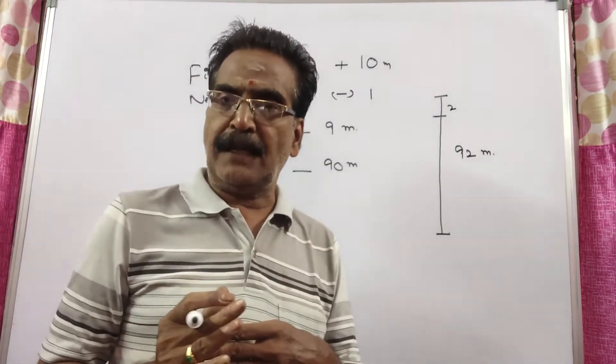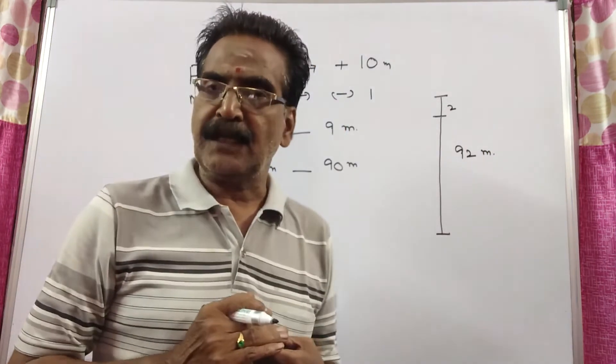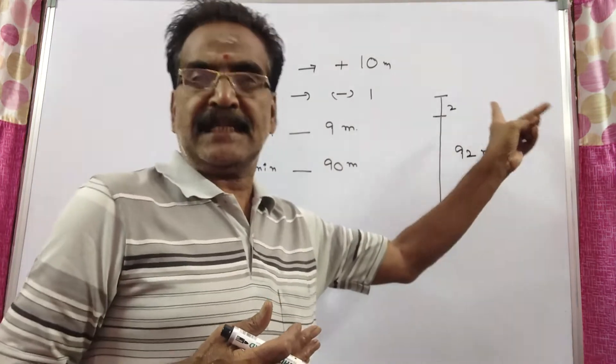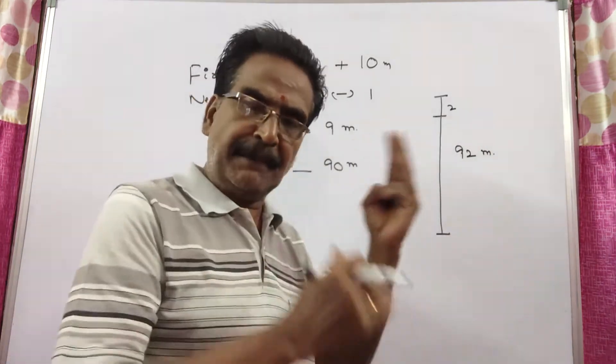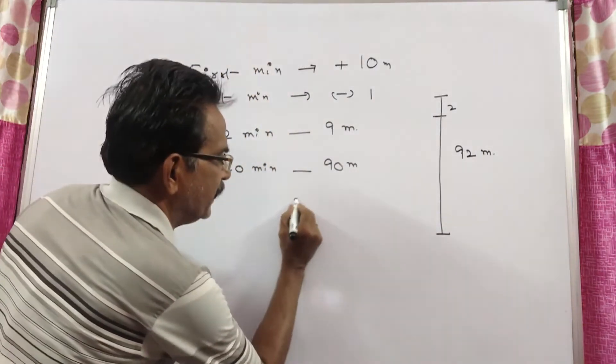Here, what is the speed of the monkey? It can climb up 10 meters per minute. So, these 2 meters can be climbed up in 2 by 10 minutes.